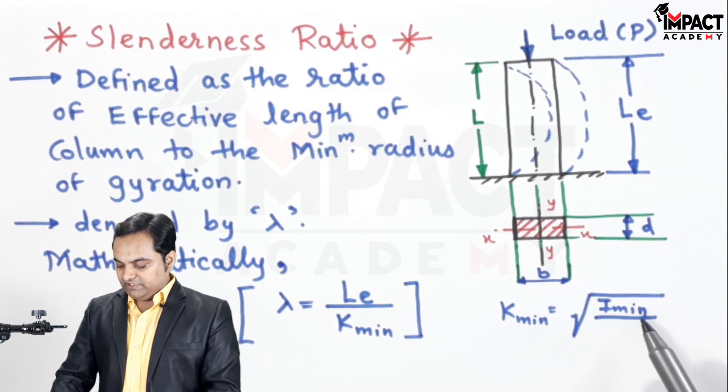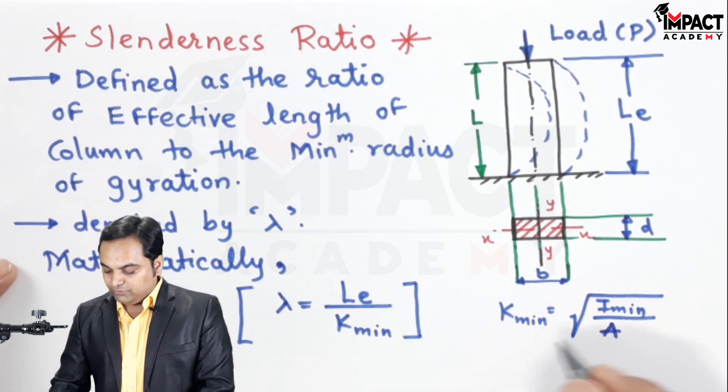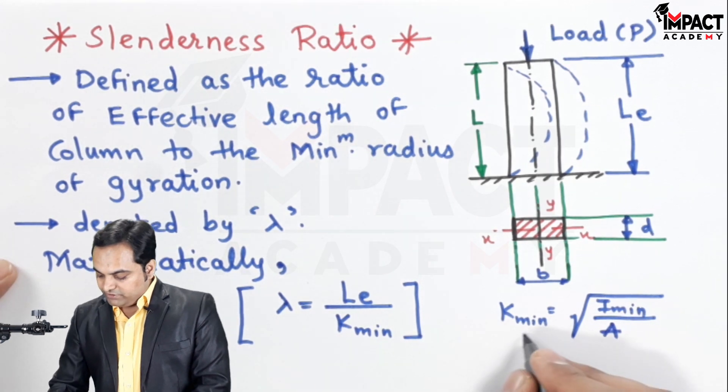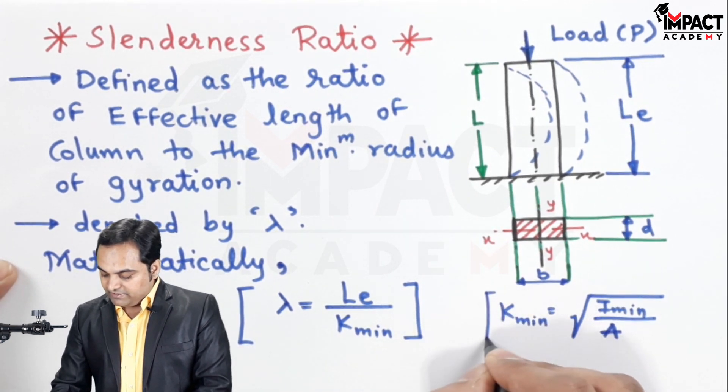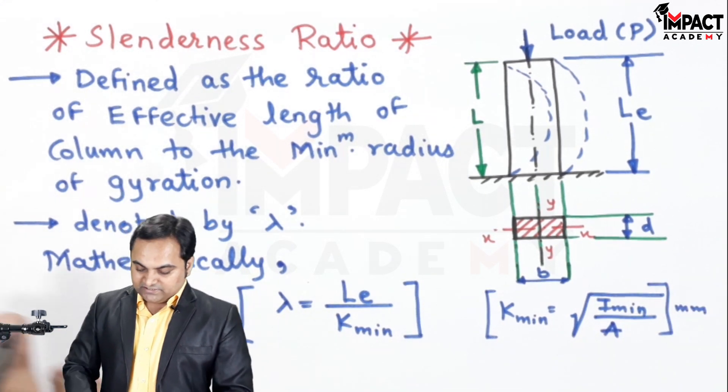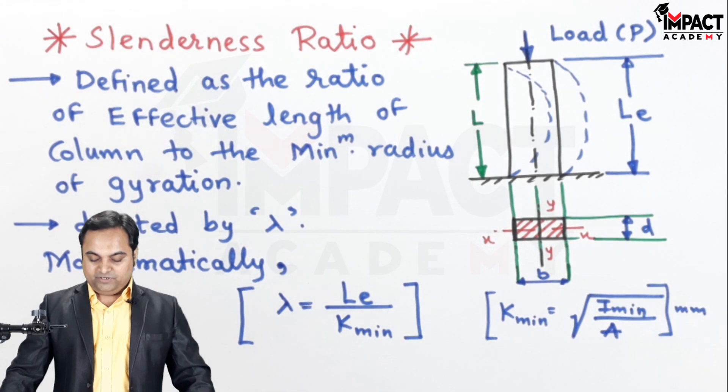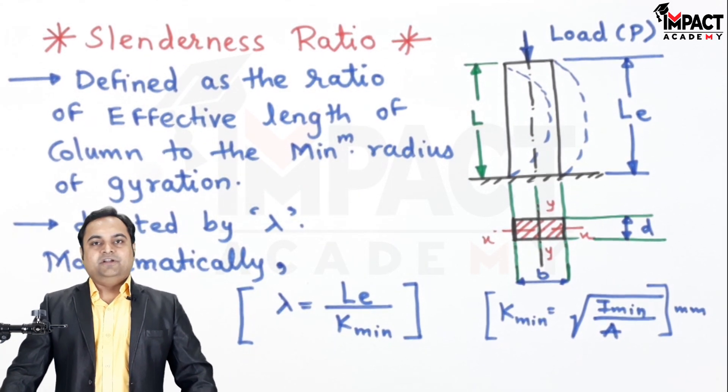That I minimum upon area - the root of this value, where area is the cross-section area of the column, would give us the answer for K minimum, that is the minimum radius of gyration. So basically, slenderness ratio is the ratio of effective length of column to the minimum radius of gyration.